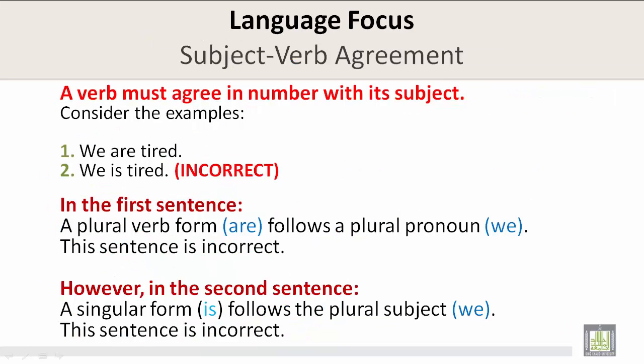Language focus: subject-verb agreement. A verb must agree in number with its subject. Consider the examples: 'We are tired.' We is plural, so you must use the verb 'be' in plural form — are. 'We is tired' is incorrect because 'is' is the singular form. A plural verb form, are, follows a plural pronoun, we.